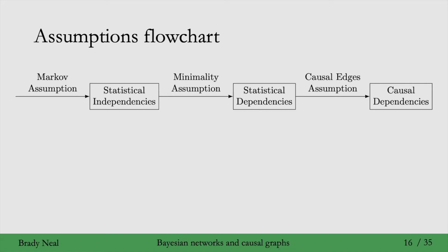We already saw the Markov assumption and minimality assumption and how those get us to statistical dependencies in our graph. When we add the causal edges assumption on top of that, we can talk about causal dependencies in our graphs. This will be key for talking about the flow of not only association — which is a statistical dependence — but also causation, which is causal dependence.